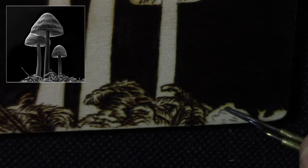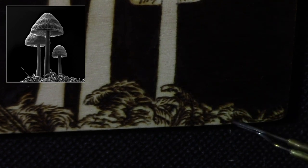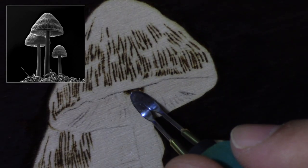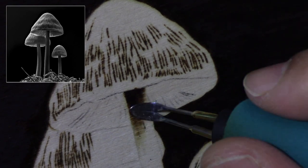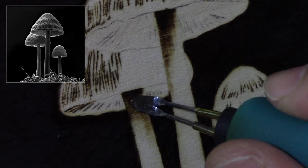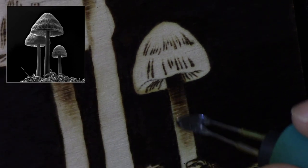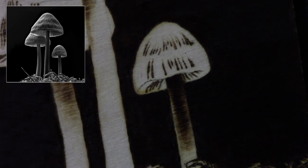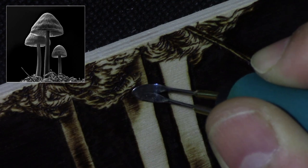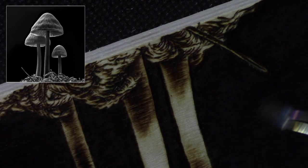So all the lines are in and I started shading again with the spear point shader because the pointy edge gives me a little more accuracy at the top of the mushroom and here on the bottom also.